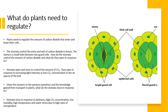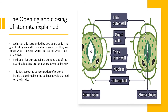If you remember from transport in plants where we discussed transpiration, we also mentioned that things like low humidity, high temperature, and the availability of water can affect transpiration. Transpiration mostly happens through the stomata in the leaves. So how do the stomata open and close? The stomata are surrounded by two guard cells and they gain or lose water by osmosis.